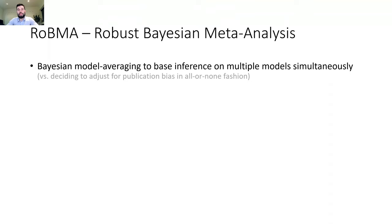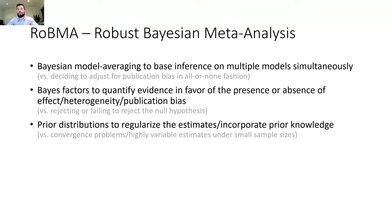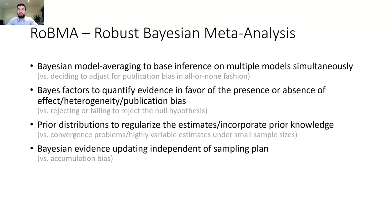Instead of selecting a single model, you specify all of the models, fit them, and base your inference proportionately on how well the different models predicted the data. You then use Bayes factors to quantify the evidence in favor of the presence or absence of either the effect, heterogeneity, or publication bias. You can use prior distributions to regularize the estimates and incorporate prior knowledge, and use Bayesian evidence updating that is independent of the sampling plan.